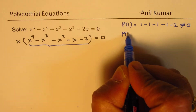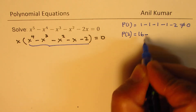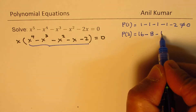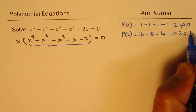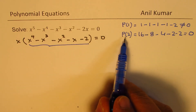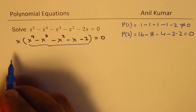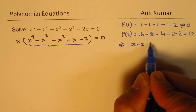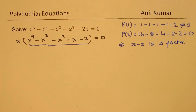But if we try 2, in that case 2 to the power of 4 is 16, minus 2 cube is 8, minus 2 square is 4, minus 2, and then minus 2. So that gives you 0. So that means x minus 2 is a factor.